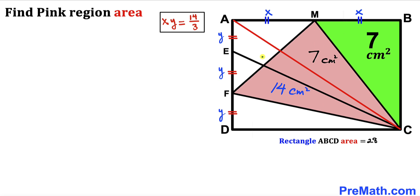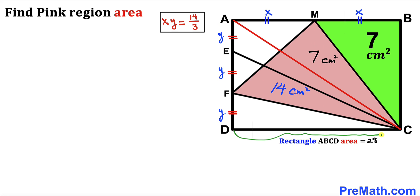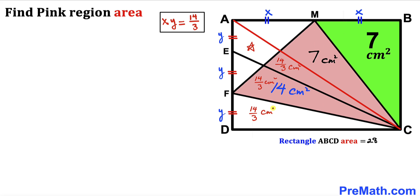Focusing on the triangles formed along the diagonal in the left half of the rectangle: these triangles all have the same base Y and the same height. Their combined area is 14 cm², so each individual triangle has area 14/3 cm². All three triangles each have area 14/3 cm².